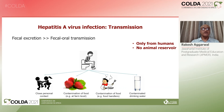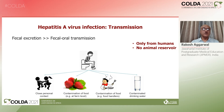Hepatitis A virus is excreted in the feces of an infected person and is transmitted by the fecal-oral route. This can be through close personal contact with the infected person or through contamination of food or drinking water. Humans are the only reservoir and one does not get it from animals.